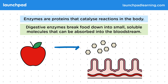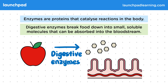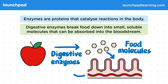If you eat food like an apple, digestive enzymes help to break it down in your digestive system into small food molecules. These food molecules are then absorbed from the intestines into your bloodstream. So how do these enzymes work to actually produce food molecules?